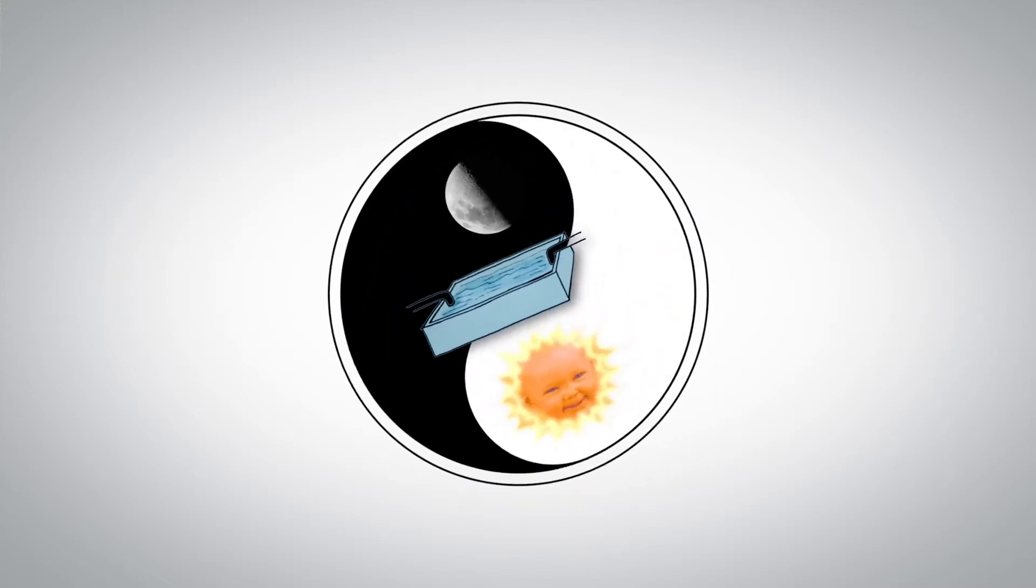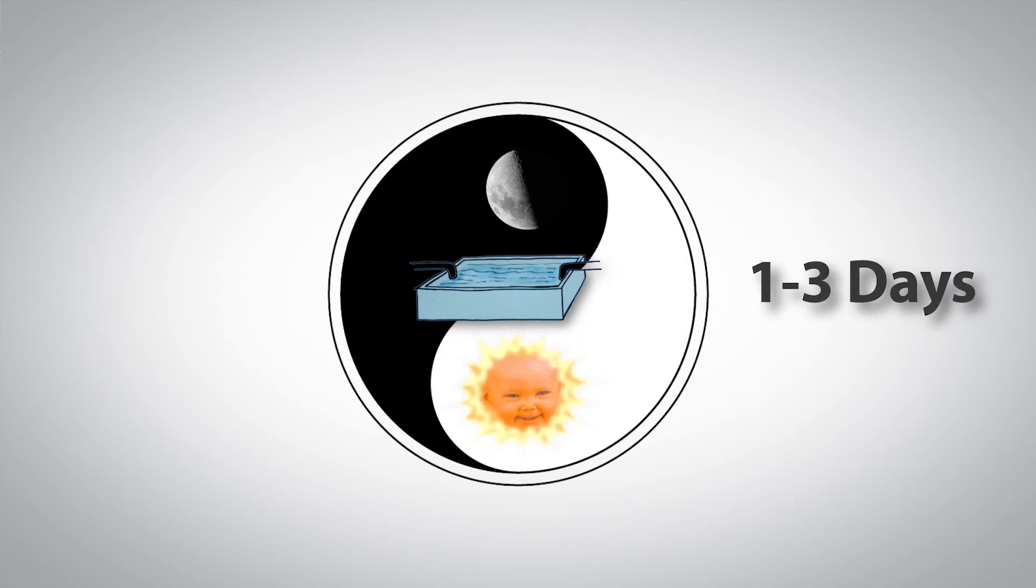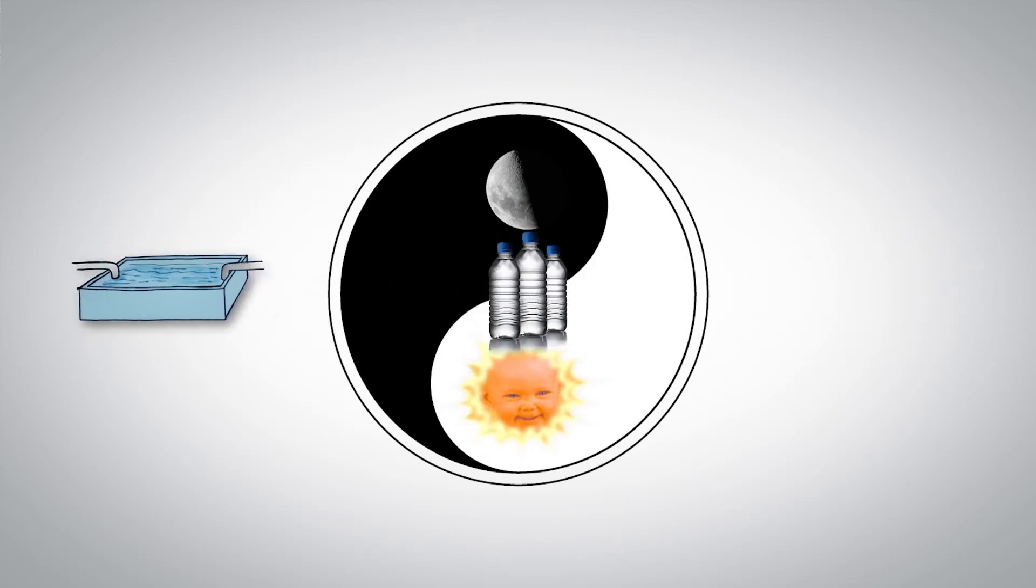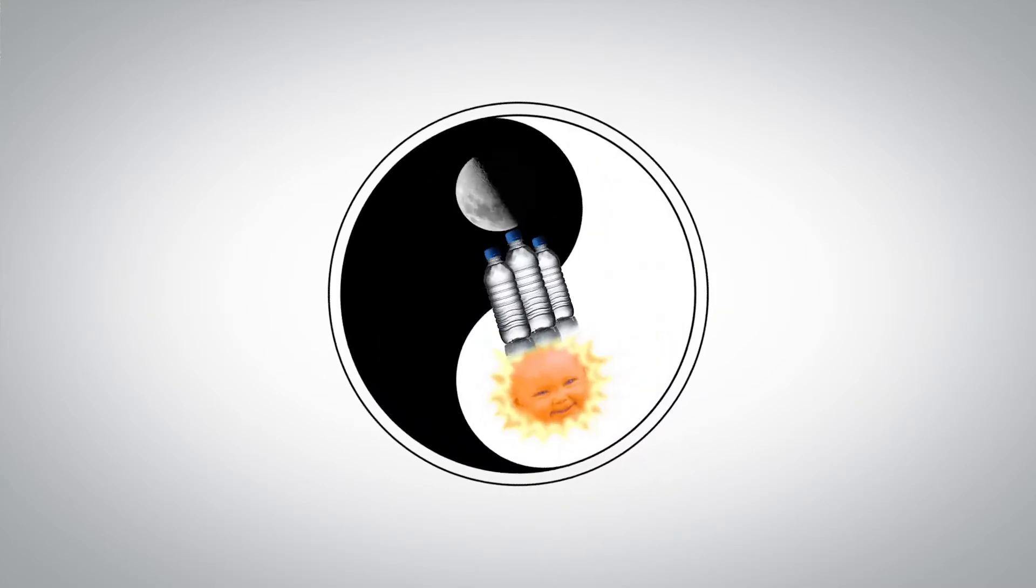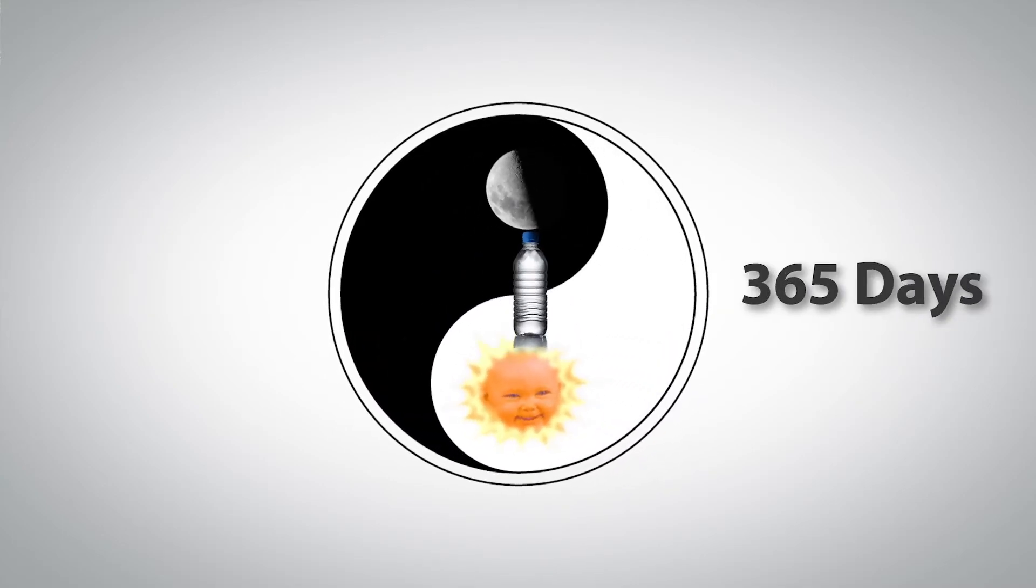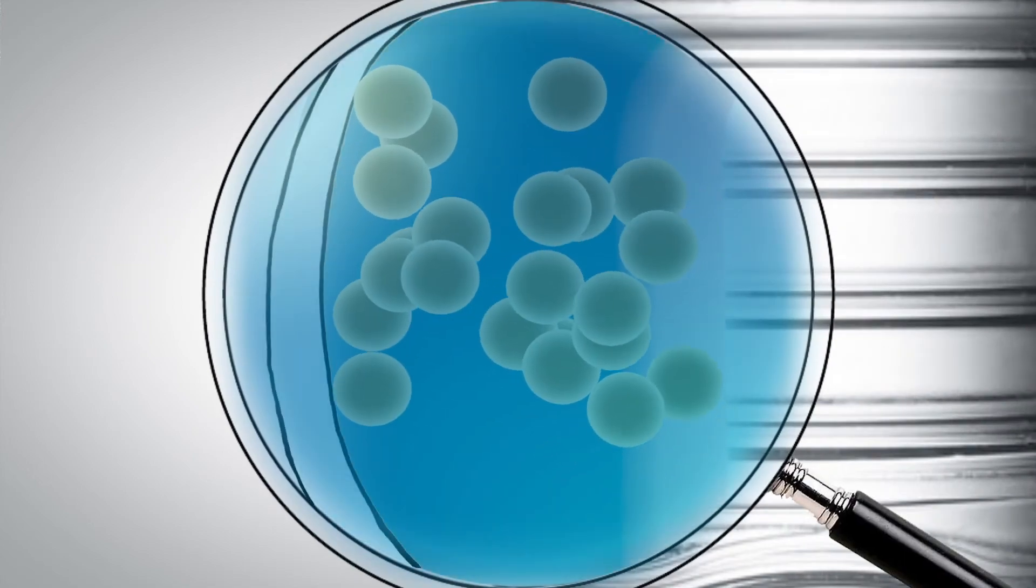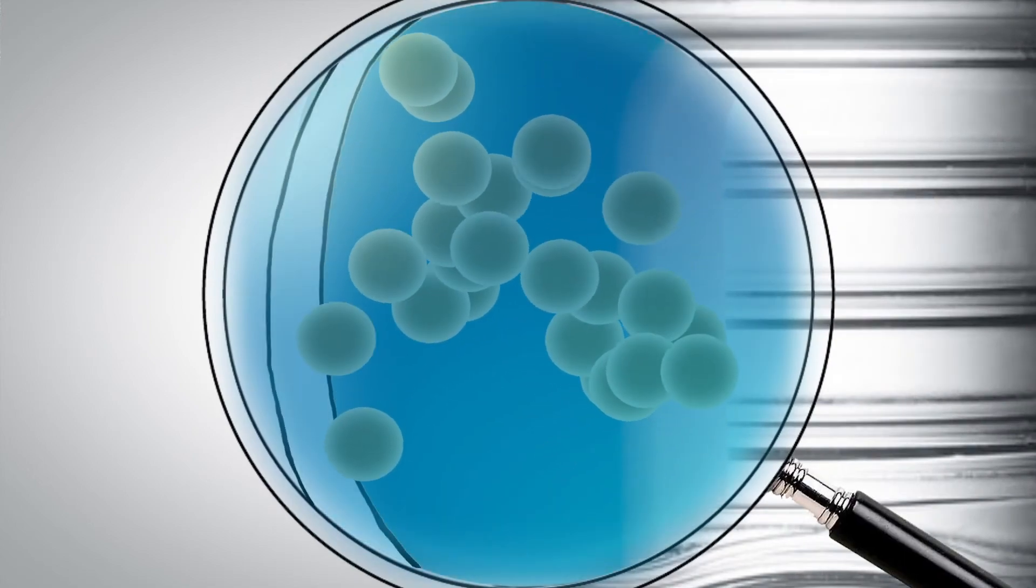Tap water only stays in the supply system for one to three days. After three days, it will be replaced by fresher water. But the bottled water can be put into the bottle for a year. Let's have a closer look. Can you see things flying freely inside?